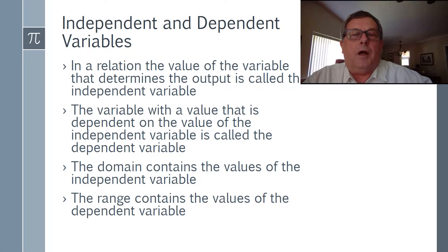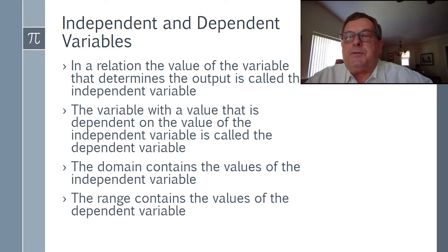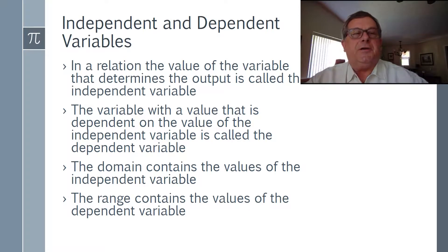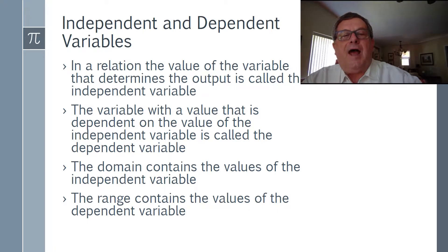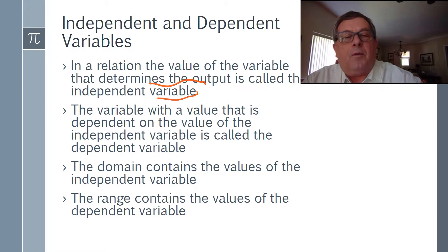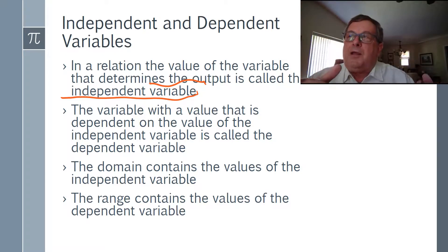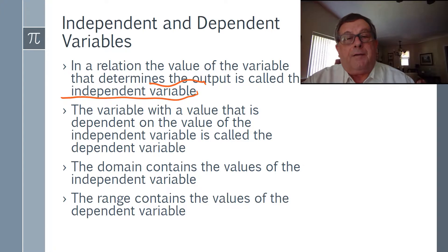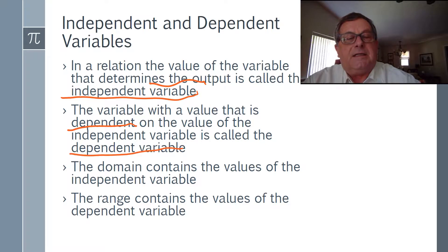In this last section on relations, we get into defining and recognizing independent and dependent variables. In a relation, the value of the variable that determines the output is called the independent variable. If the independent variable changes, it causes the dependent variable — the output — to change. The variable whose value depends on the independent variable is called the dependent variable.